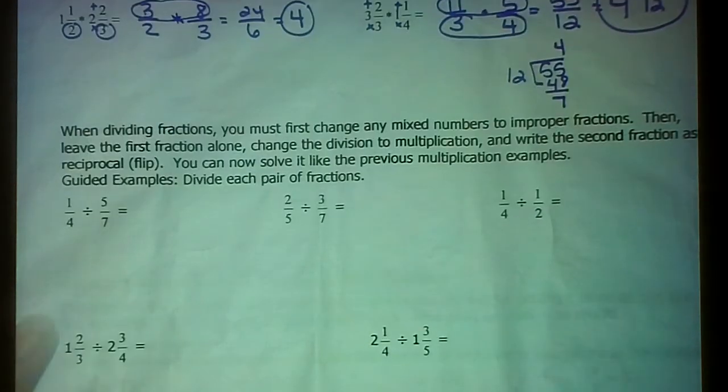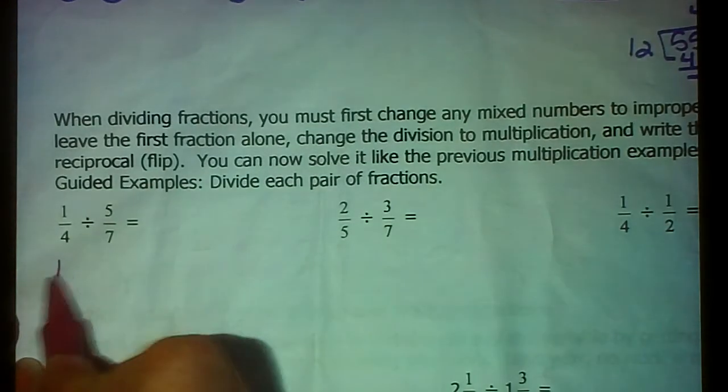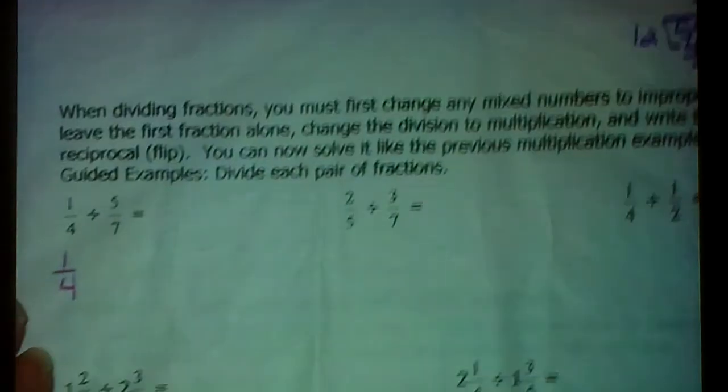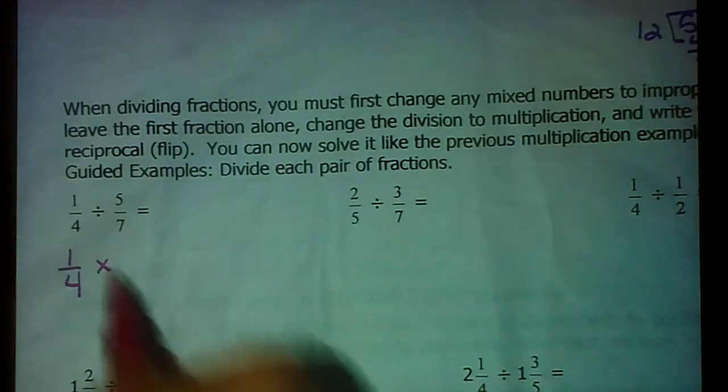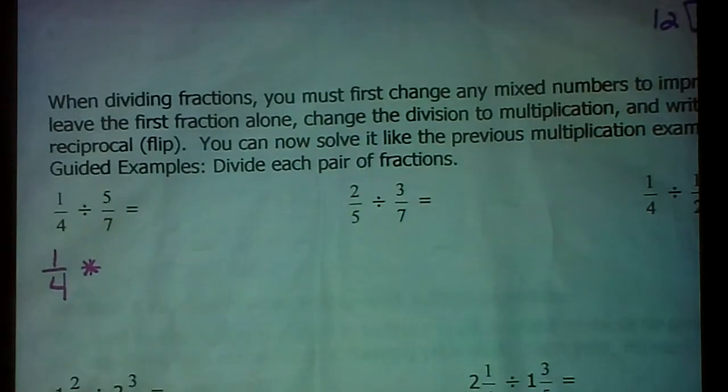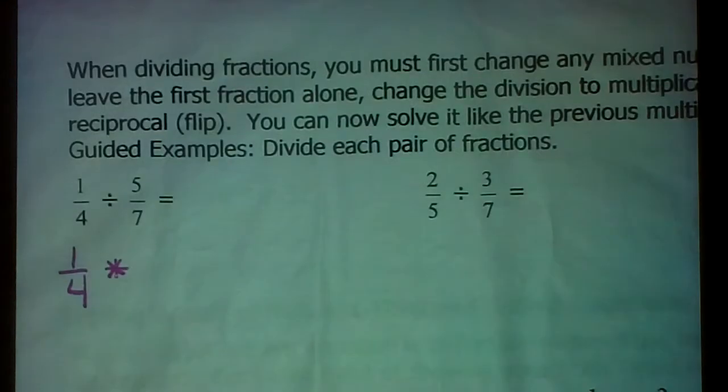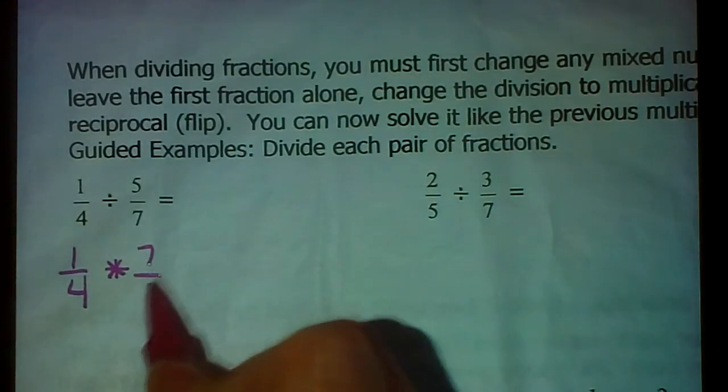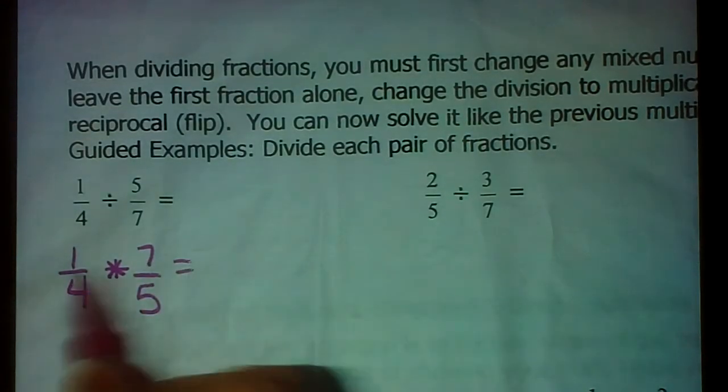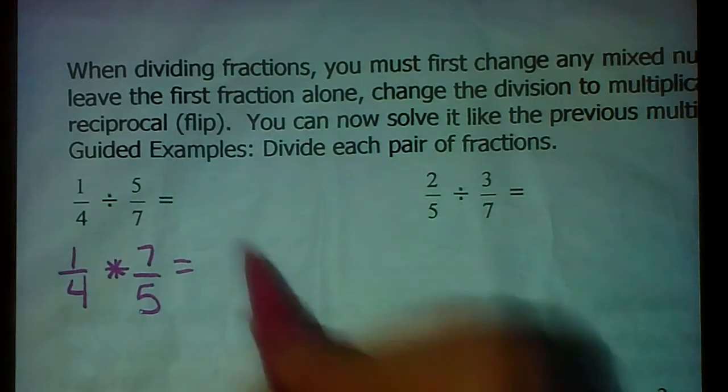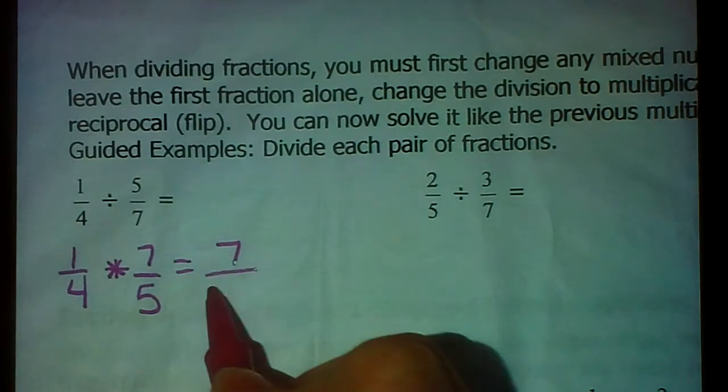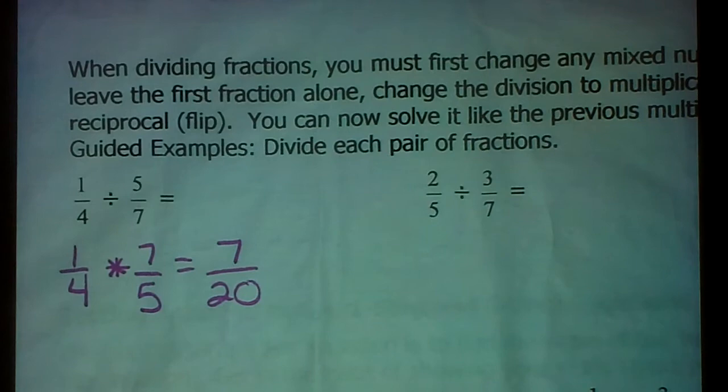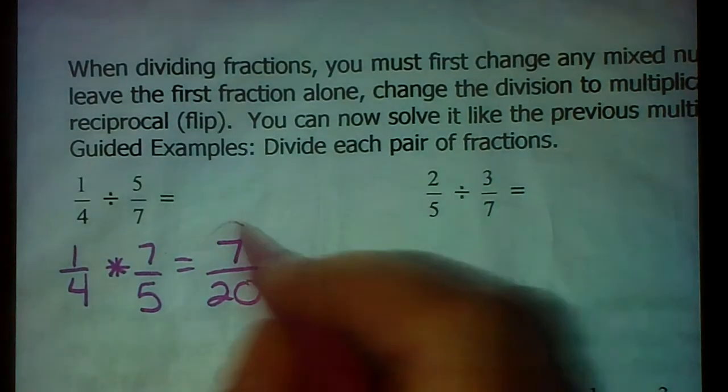So we are going to keep the first fraction the way it is. We are going to switch the division to multiplication. And we are going to flip the second fraction to its reciprocal. So that would be 7 fifths. Then you multiply straight across the top. 1 times 7 is 7. 4 times 5 is 20. They don't have any common factors other than 1, so this one's already reduced.